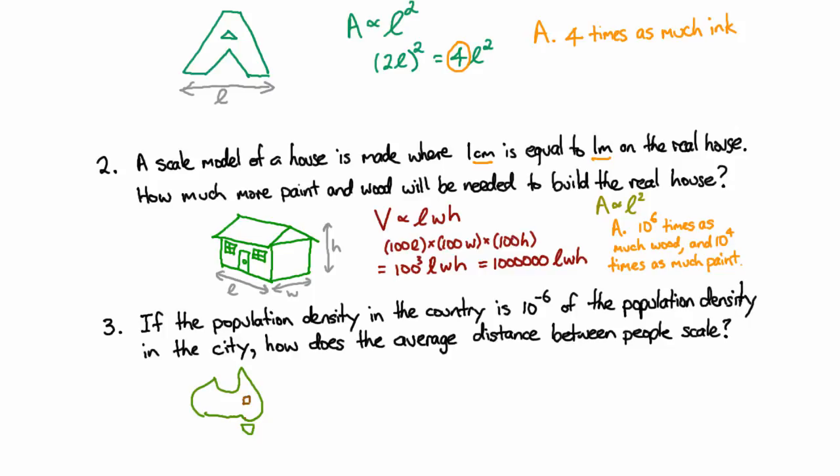All right, so if we have a certain number of people per unit area, how does the average distance between people scale? Well, we already know that the area scales as L squared. What that means, of course, is that the length scales as the square root of the area. So if you take the square root of both sides, there'll be some pre-factors in here that you have to take the square root of as well. But the length will be proportional to the square root of the area times the square root of those pre-factors.